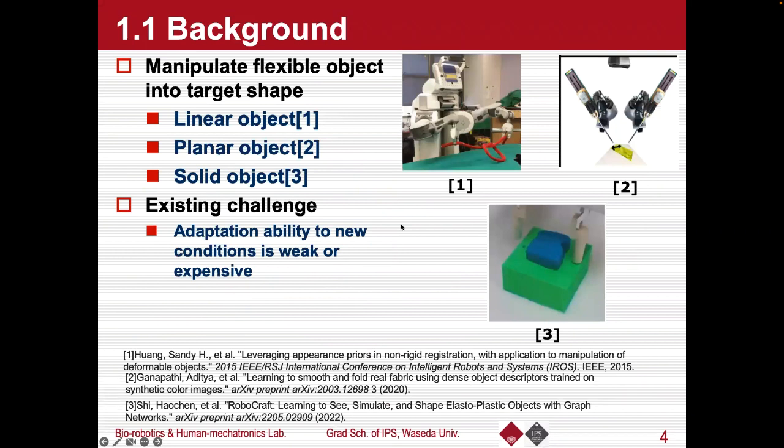Today, the expectations for automation of work are increasing. Therefore, manipulating flexible objects into target shapes becomes an important research topic. According to the deformable objects manipulated, the existing research can be divided into three categories: linear objects such as cables and ropes, planar objects such as clothes, and solid objects such as spongy blocks.